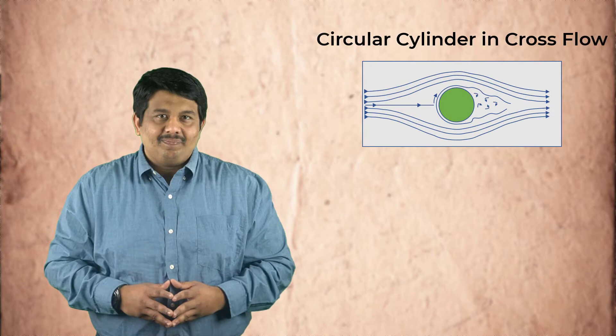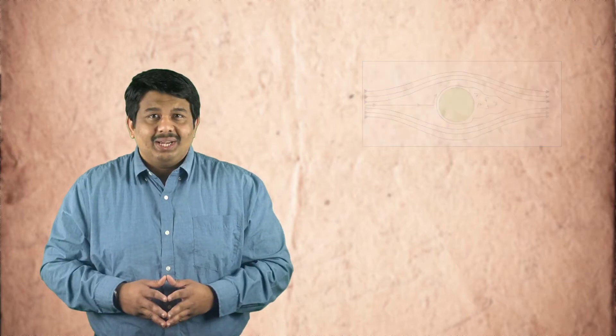The first configuration we will be looking at is that of a circular cylinder in a cross flow. Due to the ease of manufacturing, circular pipes are widely used as part of tube banks in heat exchangers. Before we discuss the heat transfer for this case, let us quickly recap the related fluid dynamic concepts.